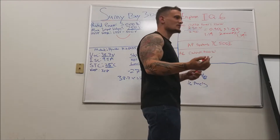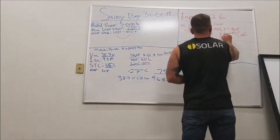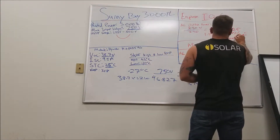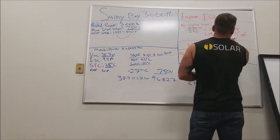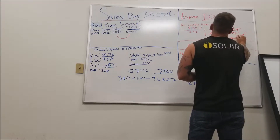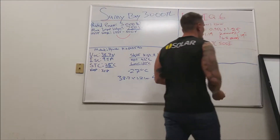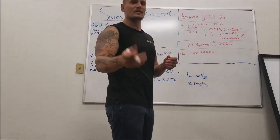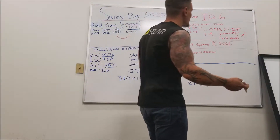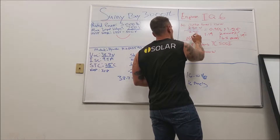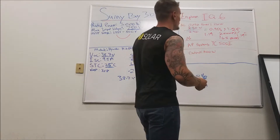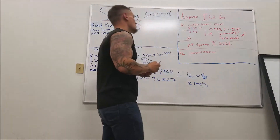That gives us 16.8. You can't put 0.8 of a microinverter on a house, so we're going to take 16 microinverters — 16 panels for that branch circuit.